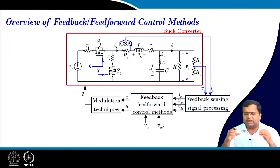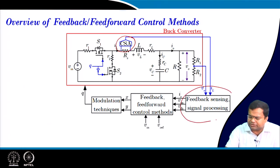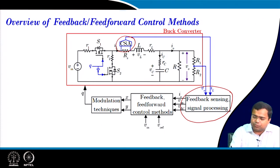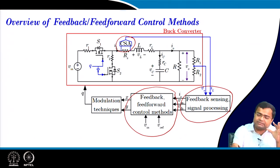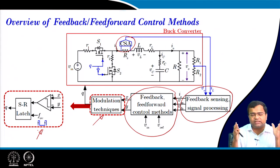Here I am showing a buck converter example, but it can be any other converter. There is a current sense amplifier and a voltage sensor. This block consists of the sensing circuit as well as the feedback resistive divider and some signal processing like impedance matching. The output of this sensing block will come to the feedback and feed forward control block. We have discussed this in detail in our earlier NPTEL course, along with MATLAB implementation. Ultimately these signals have to be converted into gate signals, so you need a modulation technique. Here I am showing a simple pulse width modulation using a latch and comparator. You can synchronize with a fixed frequency clock — that is why it is called pulse width modulation — and by means of a comparator and a latch circuit you can generate the duty ratio of this converter.